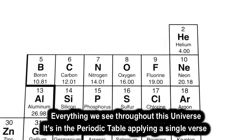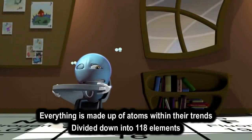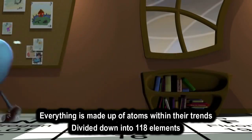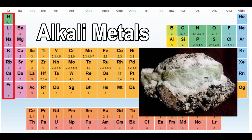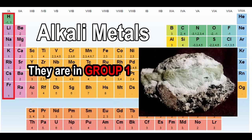Everything we see throughout this universe is in the periodic table applying a single verse. Everything is made up of atoms within their trends, divided down into 118 elements. The alkali metals are shiny when they are pure and highly reactive when at room temperature. They are in group 1: